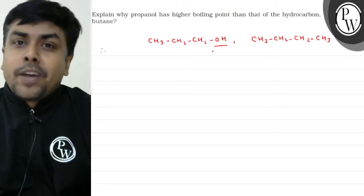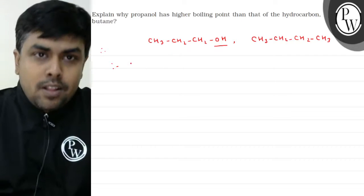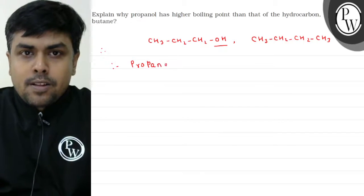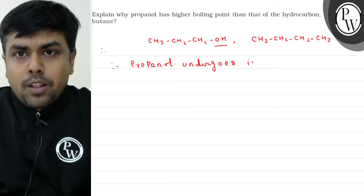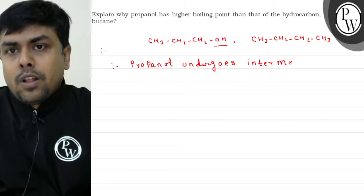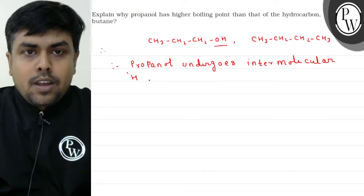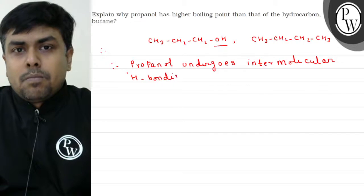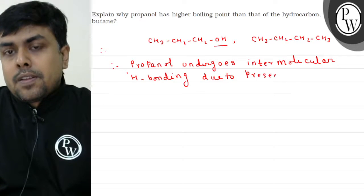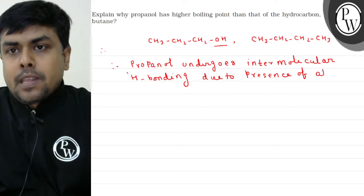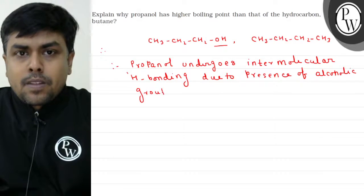Ab baat karoon propanol ke upar — yahan ek alcoholic group present hai. And this alcoholic group se kya ho sakta hai? We can have intermolecular hydrogen bonding. So, propanol undergoes intermolecular H-bonding due to the presence of an alcoholic group in it.